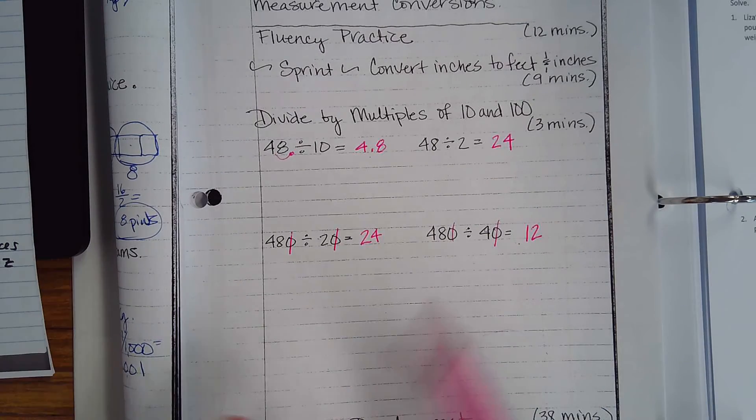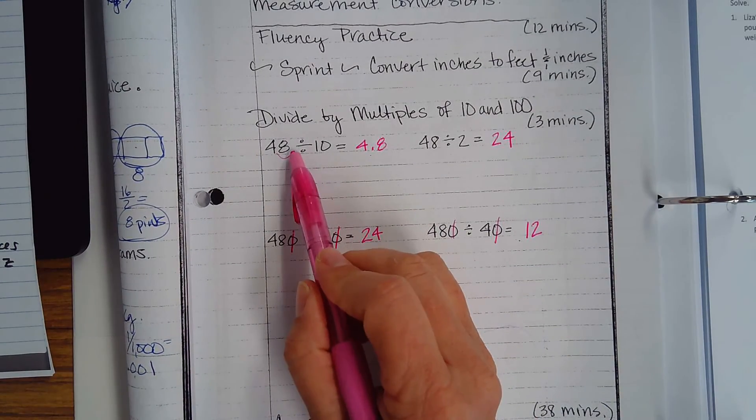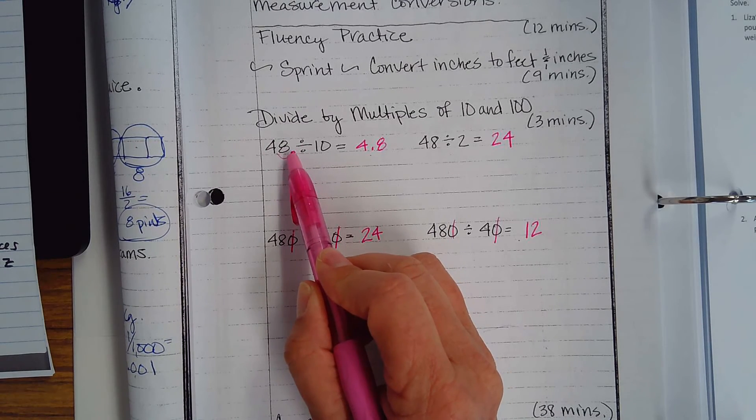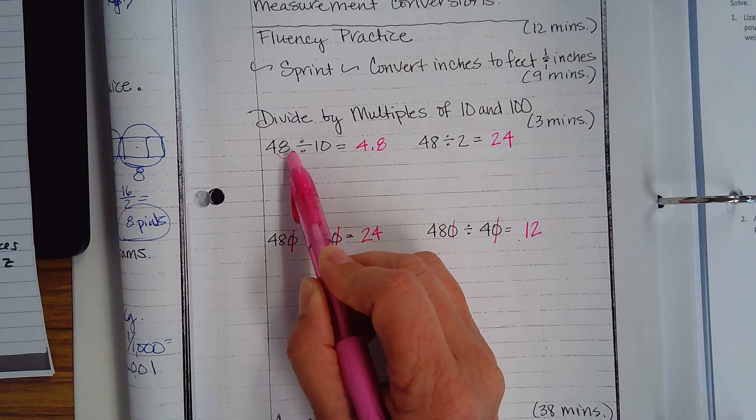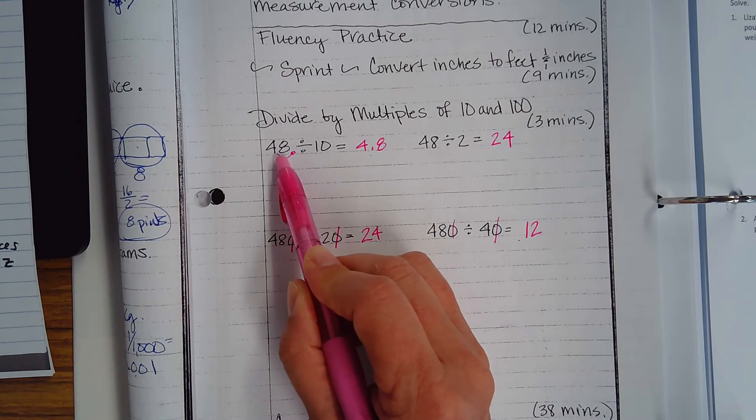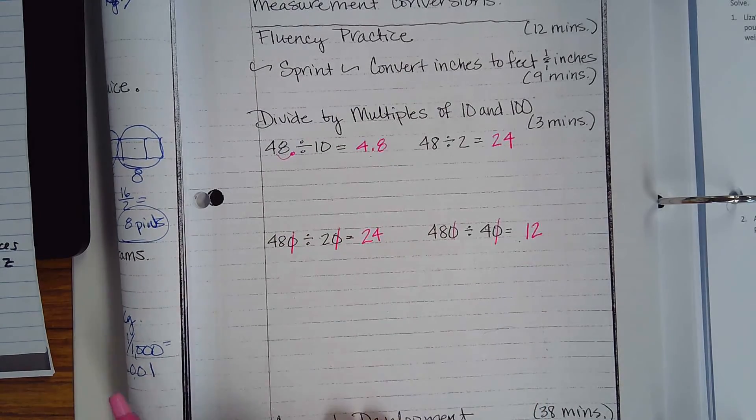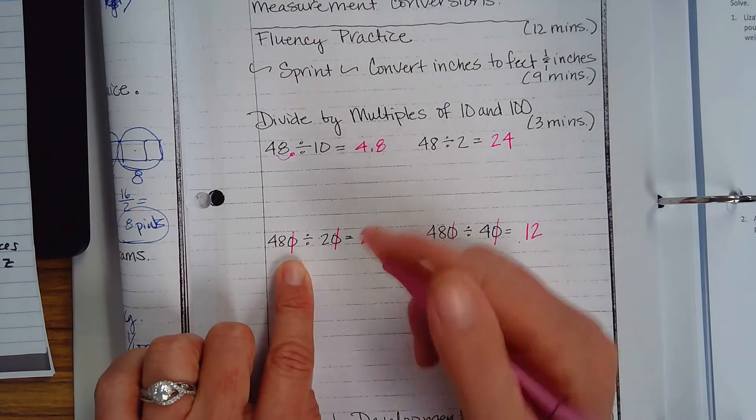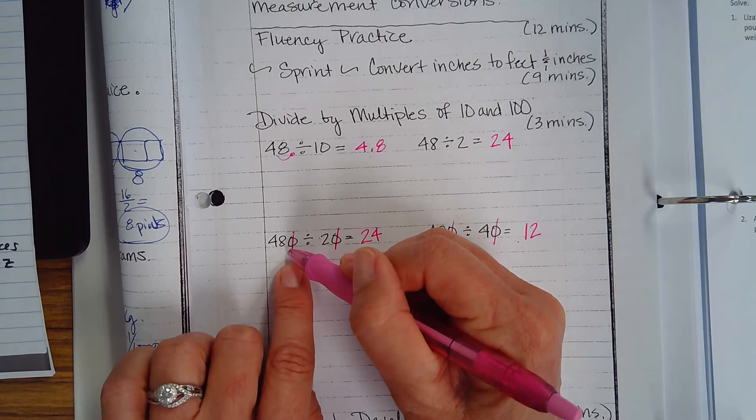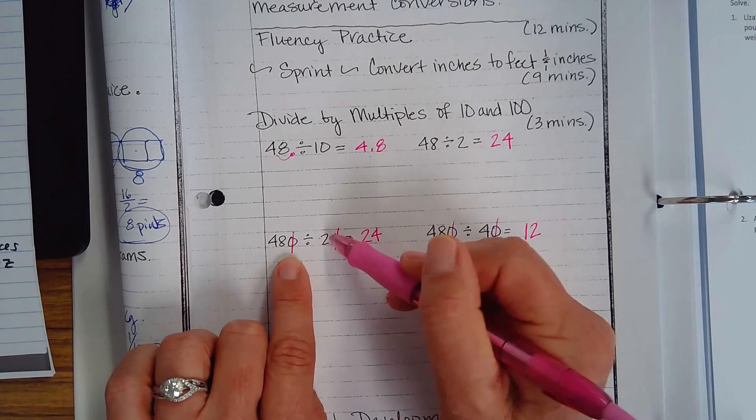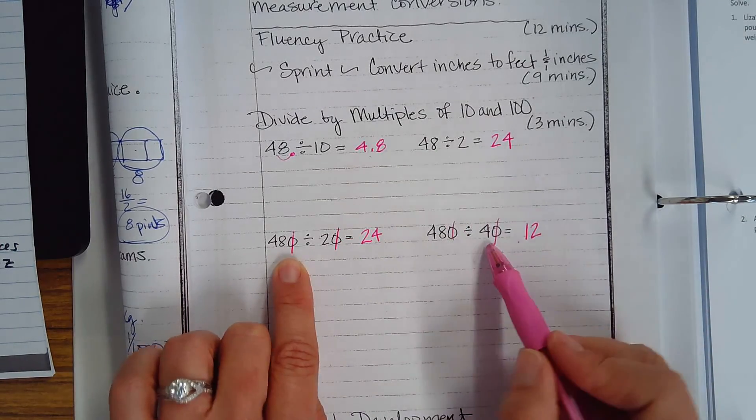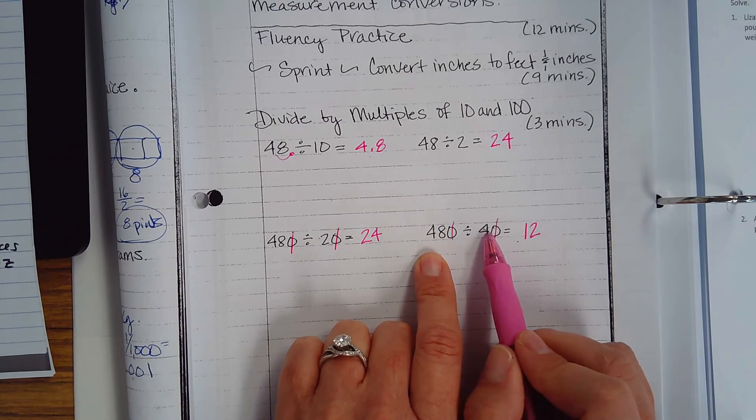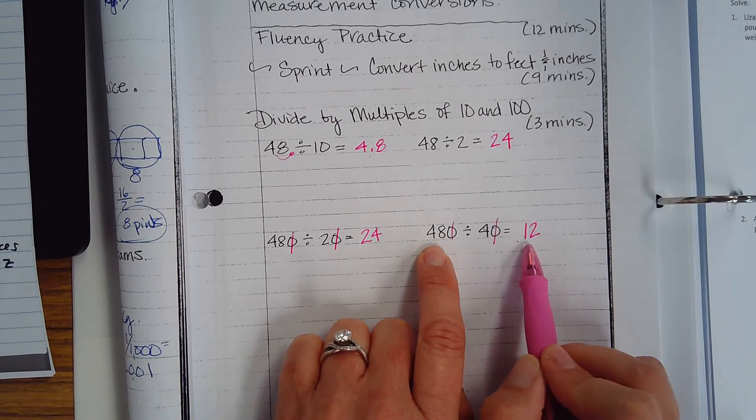All right, we are now going to debrief. So remember, we're dividing. So we're going to take our decimal that lives on the other side of the ones place value and move it over. 4.8 - 48 divided by 2 is 24. When I'm dividing and both numbers have a zero, I just cross off the zero and then divide the numbers. Then over here, I just crossed off the zeros and I just did 4 divided into 48.